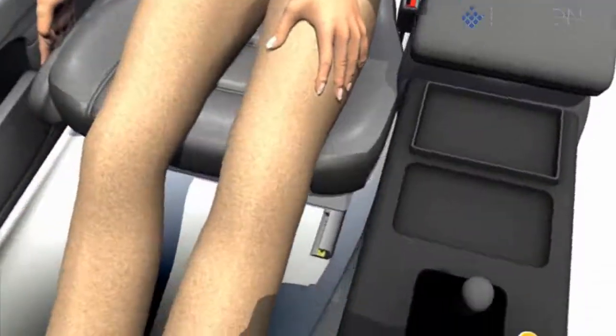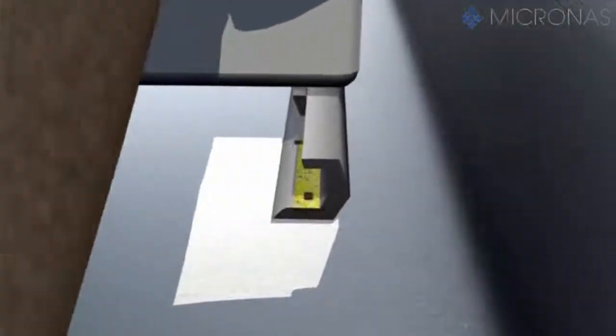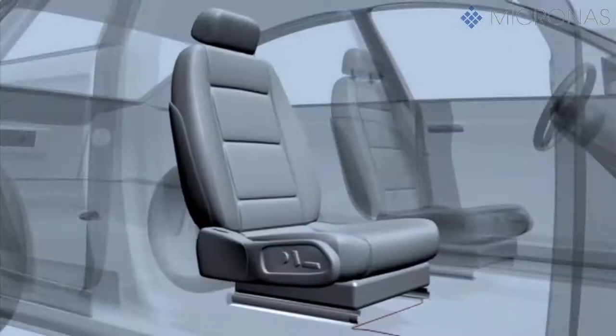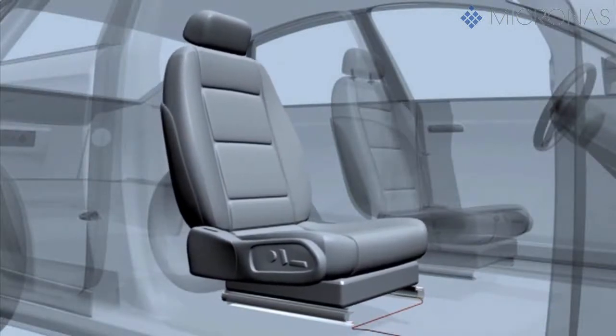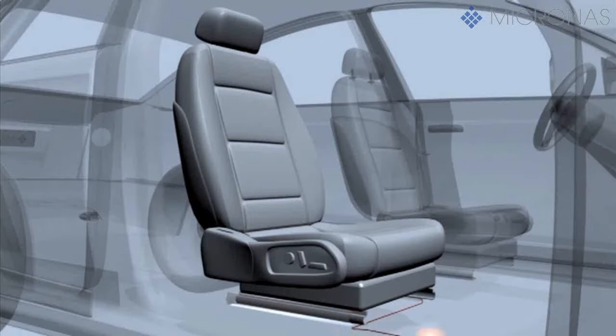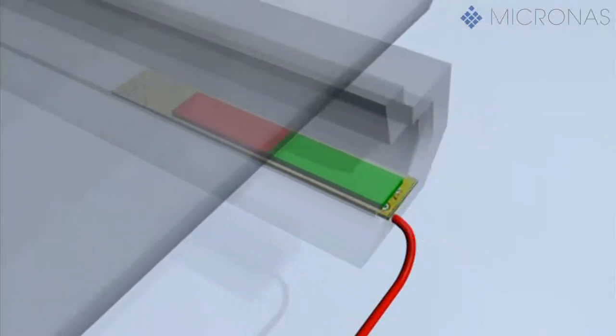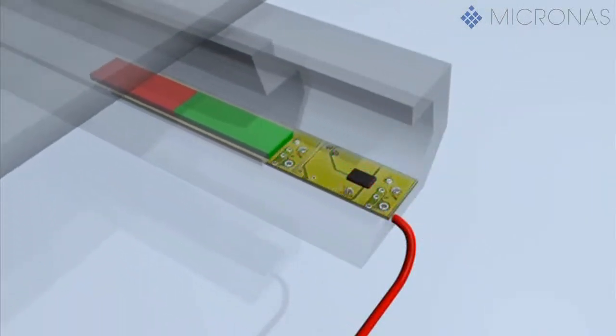The following example shows a two-wire hall sensor to distinguish between the two zones. The hall sensor is mounted on a PCB in the front one-third of the seat rail. A magnet moves across the sensor together with the seat.